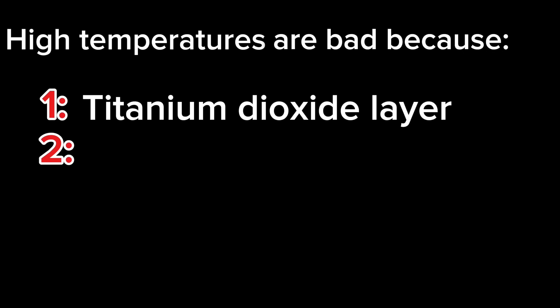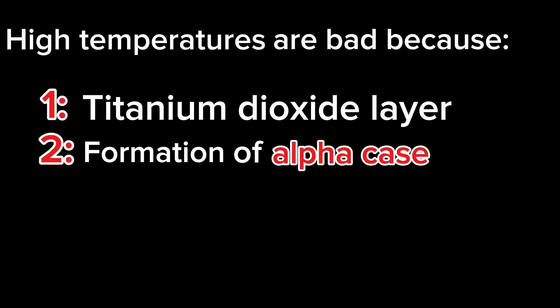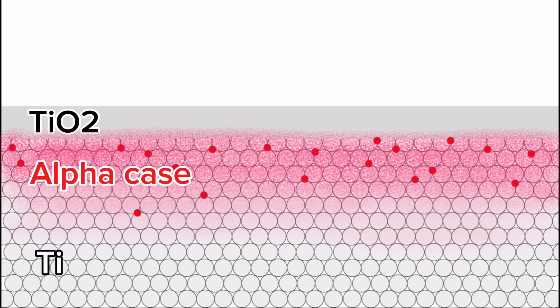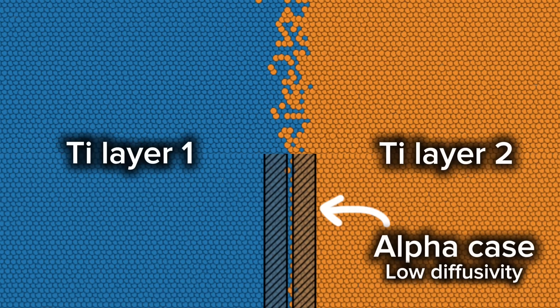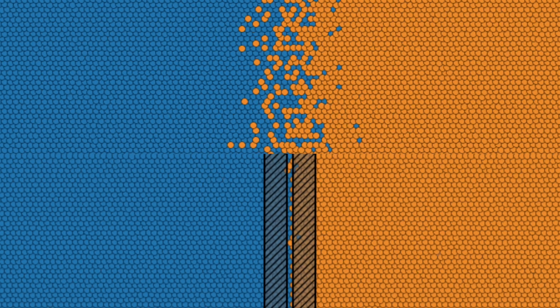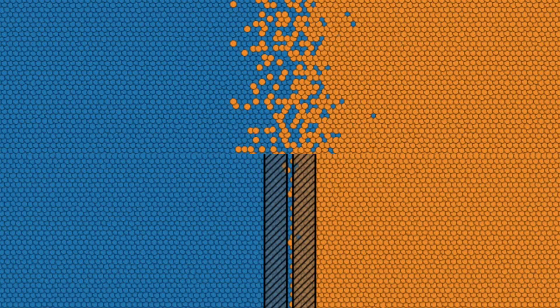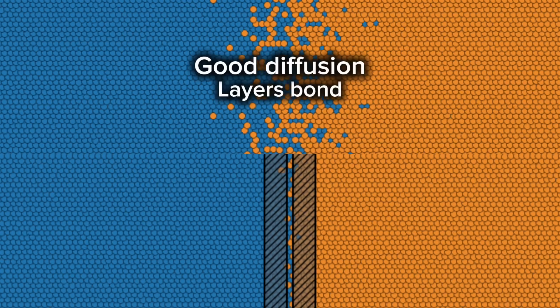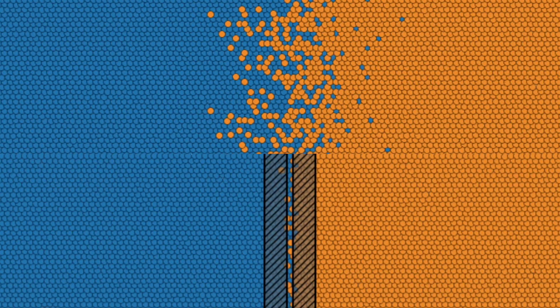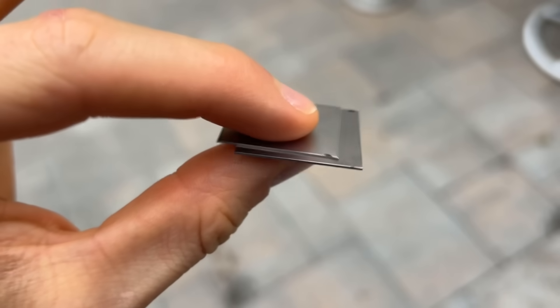And the second thing that's working against us is the formation of alpha-case. Alpha-case is oxygen-stabilized titanium in its alpha phase. Essentially, at high temperatures, oxygen can diffuse into the spaces between titanium atoms, and create a material that has a very low diffusivity for other elements. As we can see in the animation, the presence of alpha-case makes it very difficult for atoms from one piece of titanium to diffuse into another. This prevents any sort of metallurgical bond from forming, and thus the pieces don't stick together.